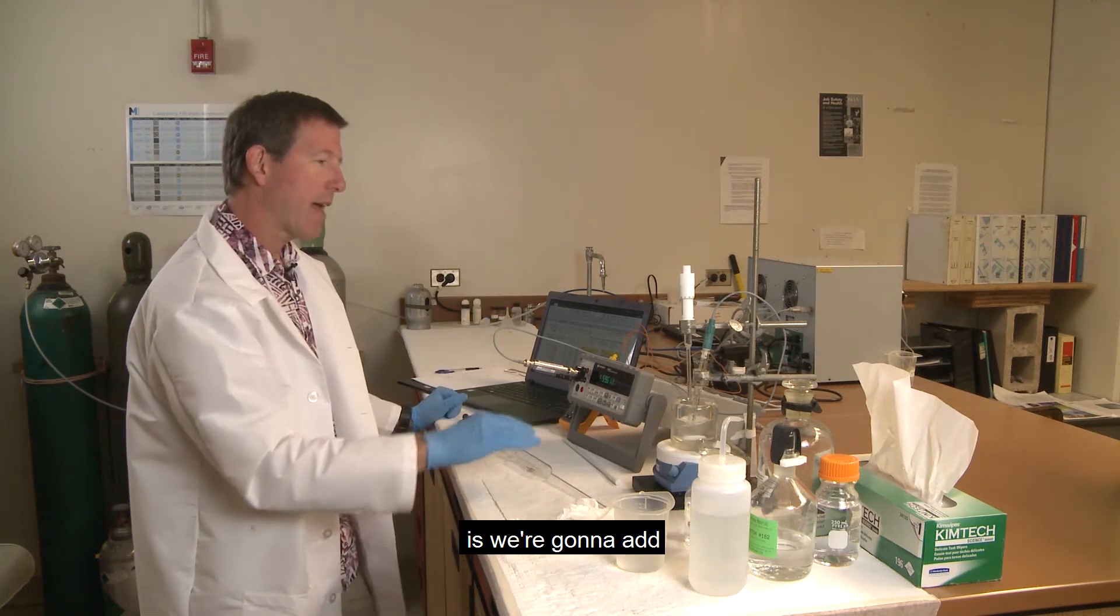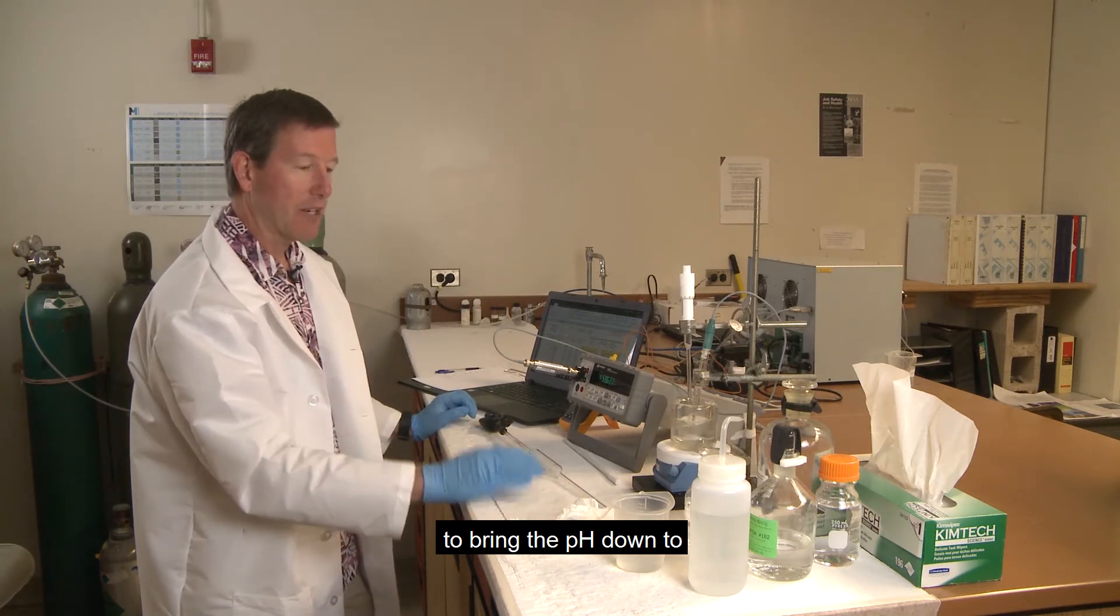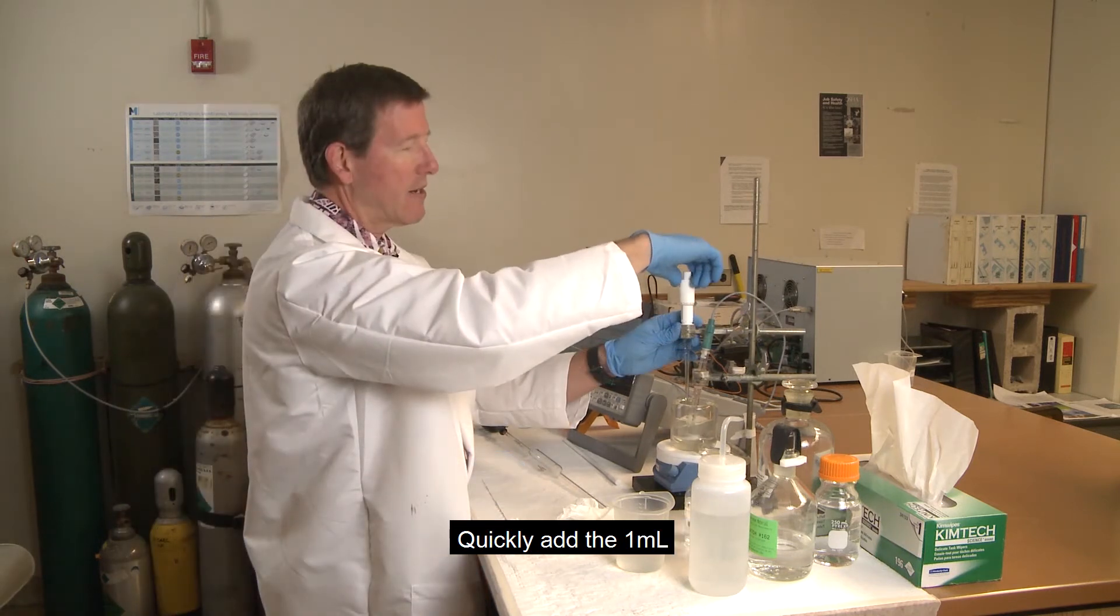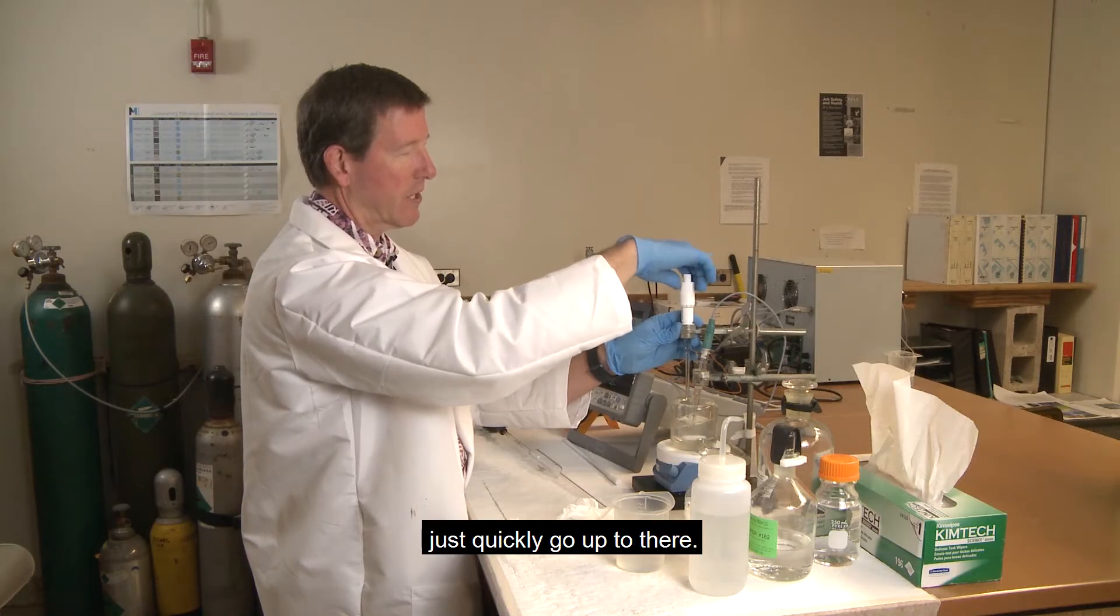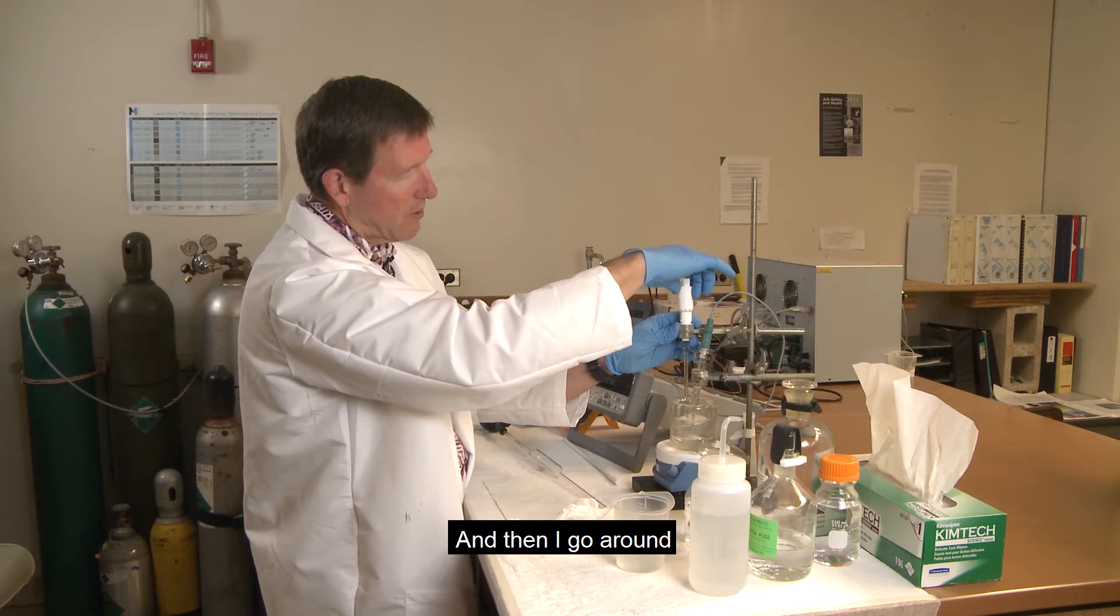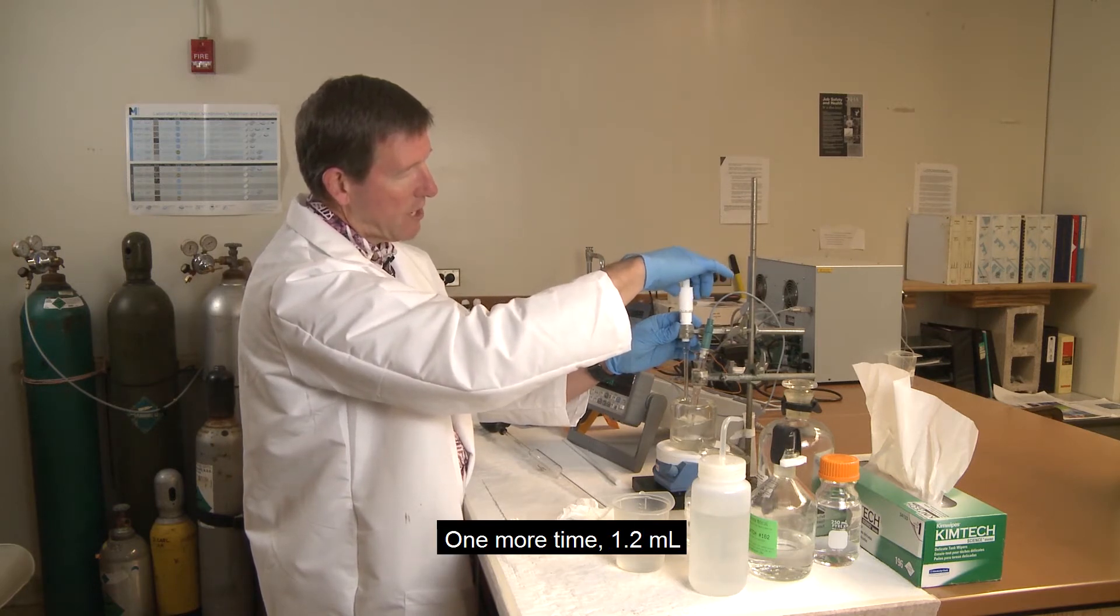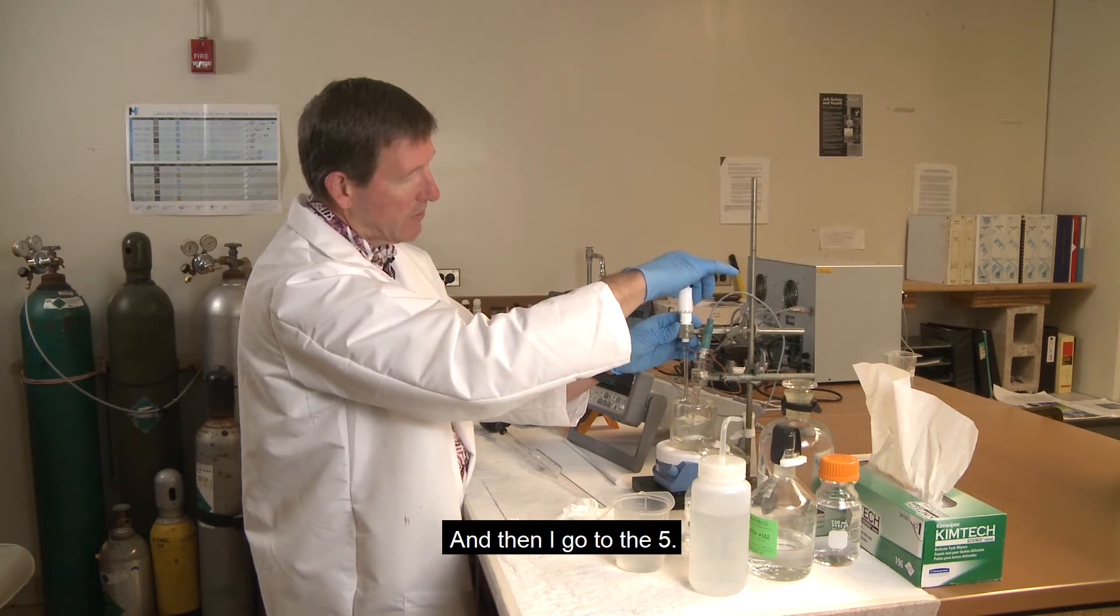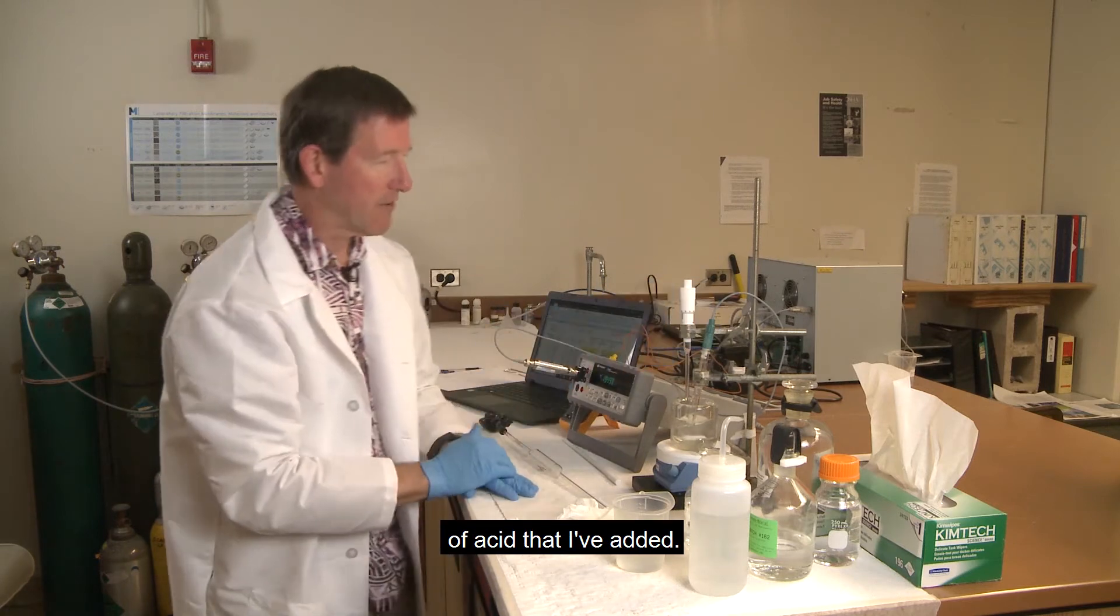Now what we're going to do is we're going to add a shot of acid to bring the pH down to the point where we want to start the titration. Quickly add the one milliliter, because there's an obvious mark there, so you can just quickly go up to there. And then I go around once more, that's 1.1. One more time, 1.2. And then I go to the five. So that's 1.25 milliliters of acid that I've added.